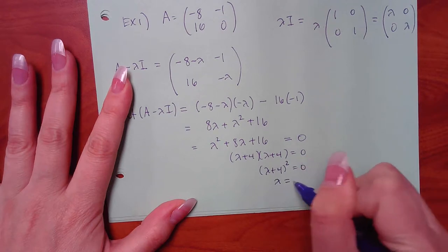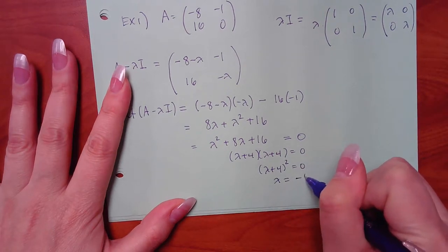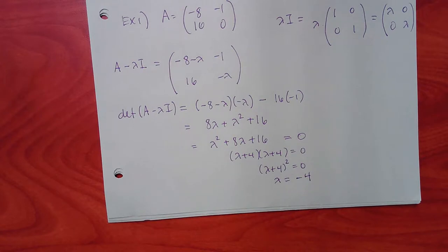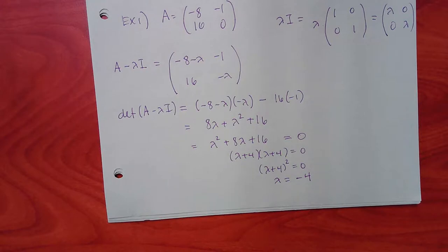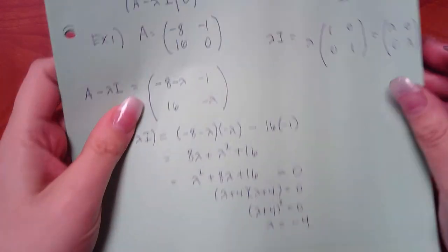That gives lambda equal to negative 4, repeated twice. For right now we don't care that it repeats — that matters in Chapter 10. We just want the lambda value, then we'll find the K vectors for each lambda.